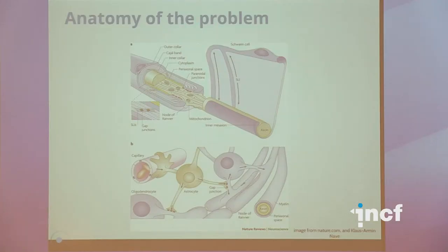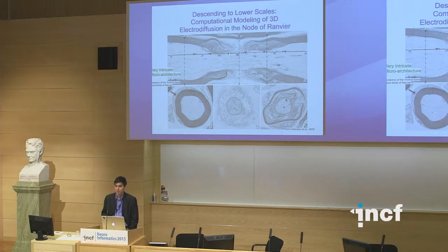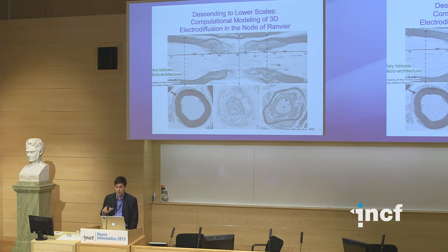If we look further at the anatomy of the problem, neurons are cells too, and axons have a rich subcellular set of activity going on. Peeling away the myelin sheaths — which are just cells themselves — we find lots of things that regulate ion channels at this level. For a deeper understanding, we need to dig further. There has been modeling at a smaller spatial scale that uses EM-level data to reconstruct nodes of Ranvier.